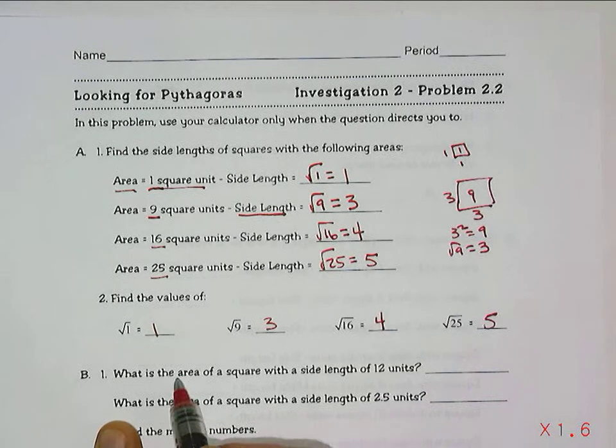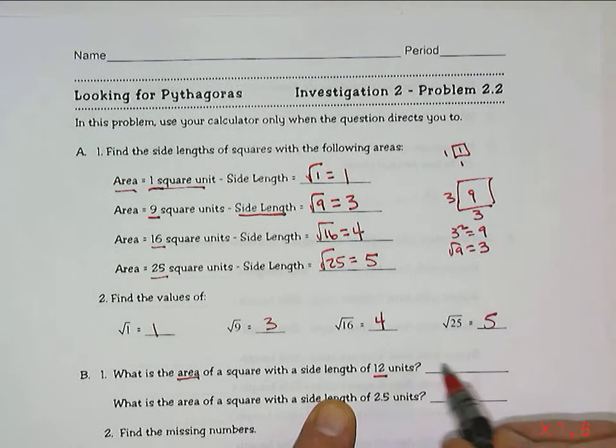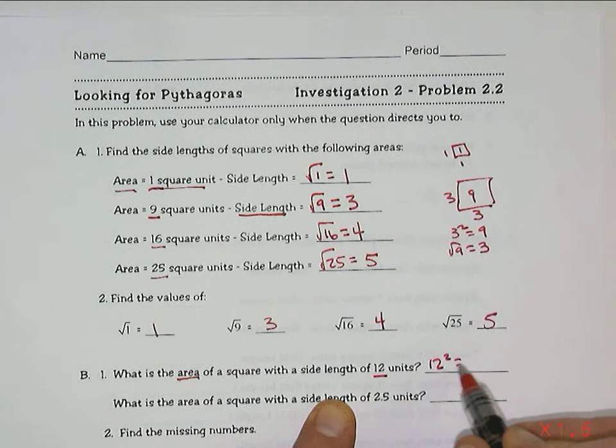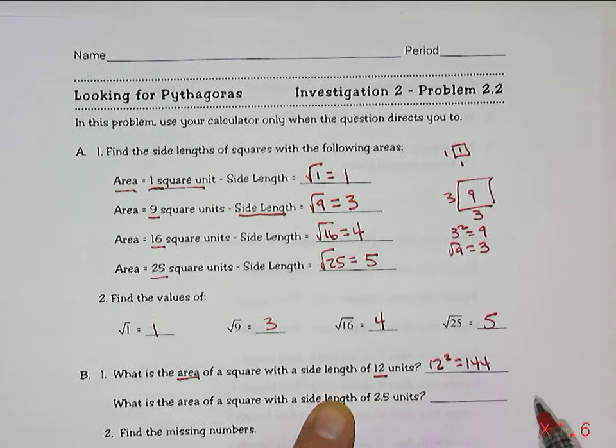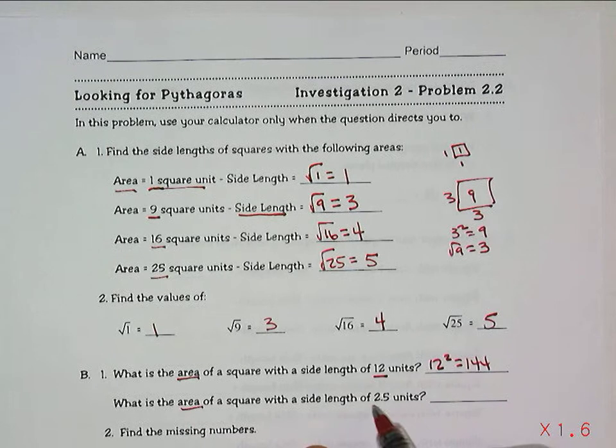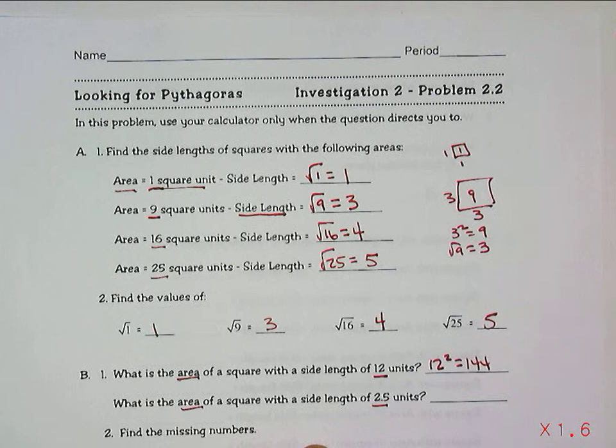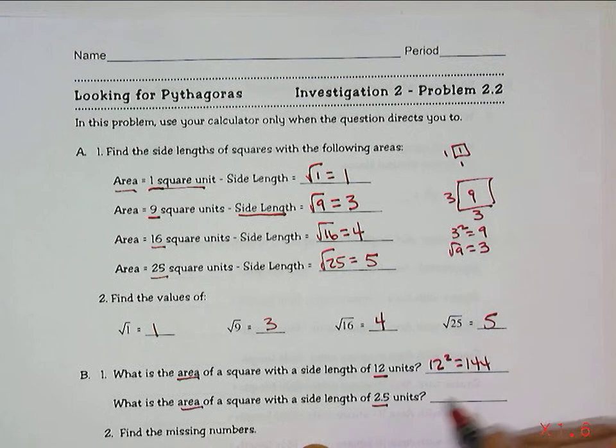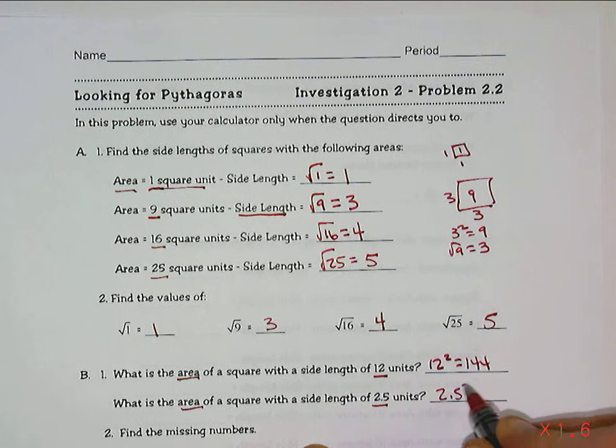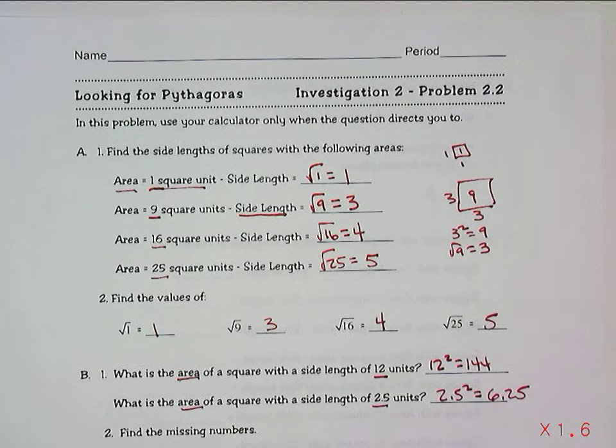So I can go the other way. If I want to find the area, and I know the side length is 12, then it's 12 squared, where 144 is the area. Area is the side length squared. 2.5 is the side length, and so if I take 2.5 squared, then I have the area of 6.25.